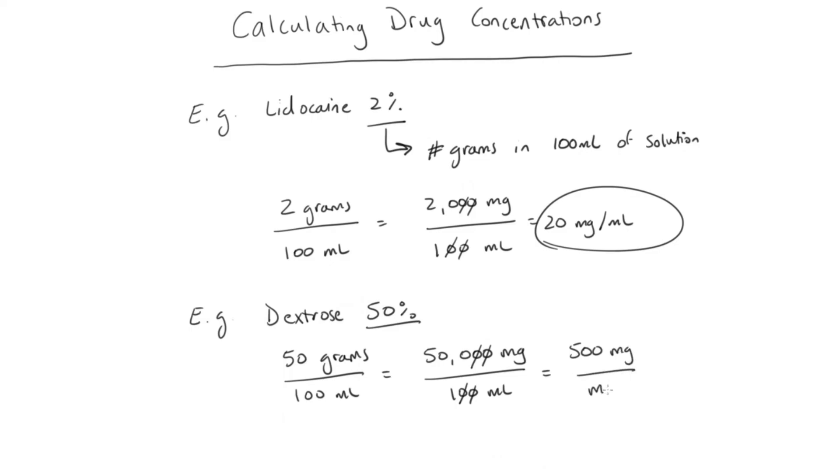Now, if you've ever seen a preload of D50, it's usually not expressed as a concentration of 500 milligrams per mil. It's usually always shown as 0.5 grams per mil, which is the same thing.